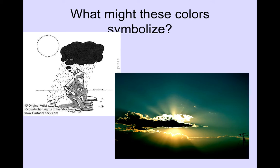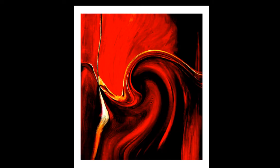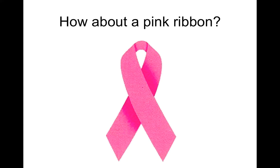Weather can also symbolize mood. Here we have a gentleman sitting on a rock — everything's sunny around him except for a rain cloud, so you can tell that he's kind of in a foul mood. And we have a sun coming out from behind rain clouds, which usually symbolizes new beginnings or a brighter day ahead. Here we have red swirls — once again, those red colors usually mean anger or conflict. And this ribbon — we've all seen it in October — is for breast cancer awareness. Without even saying that, just the color and the ribbon itself linked it to a larger idea.